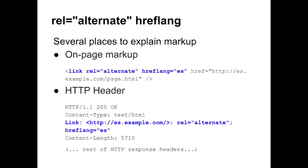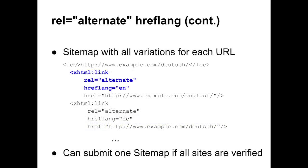Rel alternate hreflang can be listed in several places — select only one option, whichever is easiest for you. It can be placed in on-page markup as a link attribute in the head of your document. It can also be included in the page's link HTTP header. Another convenient way to specify rel alternate hreflang is in a sitemap. The sitemap will list all language or country-based language alternates for each URL. If your international expansion spans across several sites, you can submit just one sitemap listing all alternates, as long as each website is verified in Google Webmaster Tools.